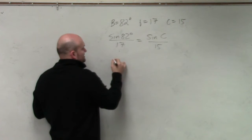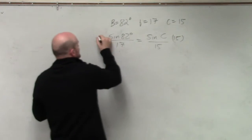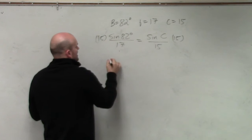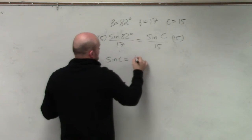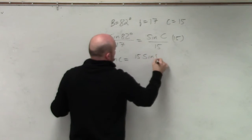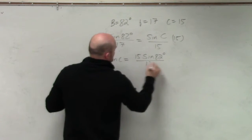Cross multiply by 15 on both sides to isolate my sine of C. So I have sine of C is equal to 15 times the sine of 82 degrees all over 17.